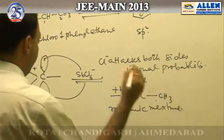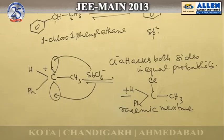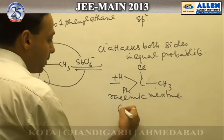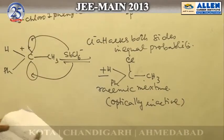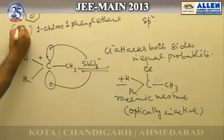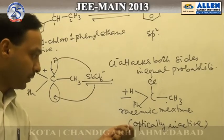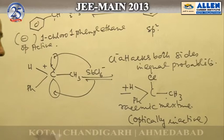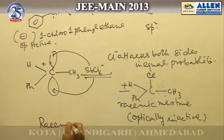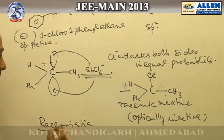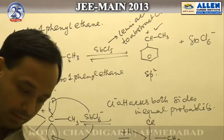Since the attack occurs with equal probability, the reaction gives rise to a plus and minus racemic mixture of the same compound — H, phenyl, CH3. Racemization takes place: we started with an optically active compound and ultimately the product becomes optically inactive. The intermediate generated is our carbocation, and the answer is 3.